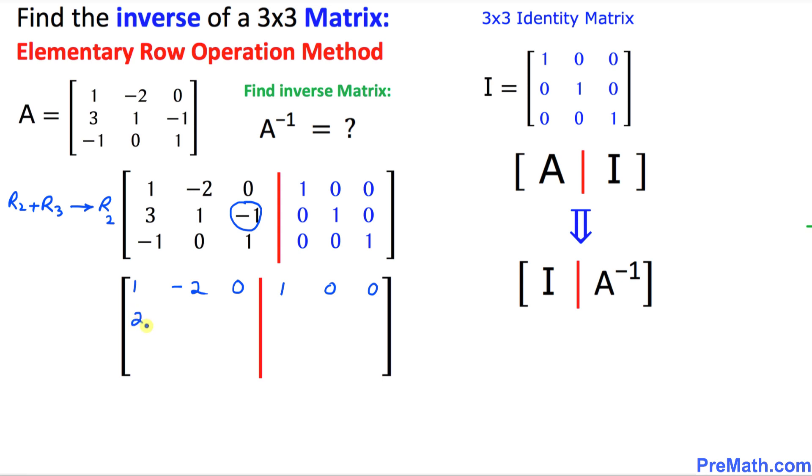0. And the second row is going to become, once we perform that elementary row operation, 2, 1, 0. We have to be very careful. And this is going to become 0, 1, 1. And at the same time, the third row is not going to change, just leave it as it is: negative 1, 0, 1. And then this is going to become 0, 0, 1.